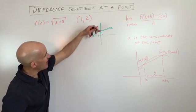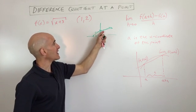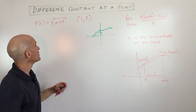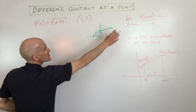of the tangent line, the line that just barely touches that function at that one point, one comma two. So what we're going to do is we're going to go ahead and use this formula over here.